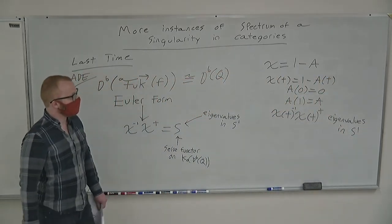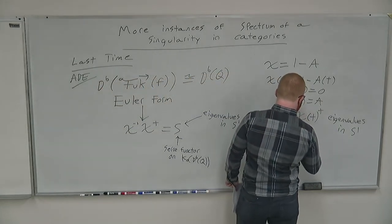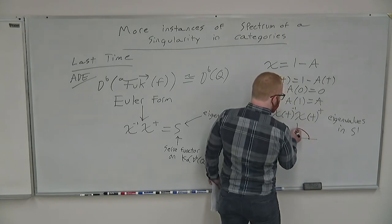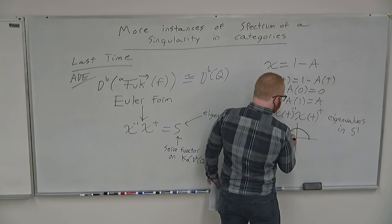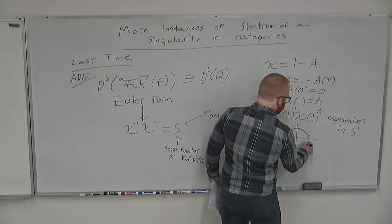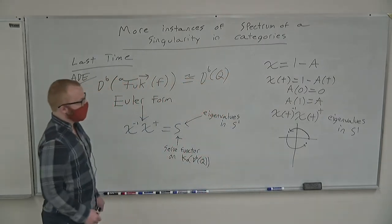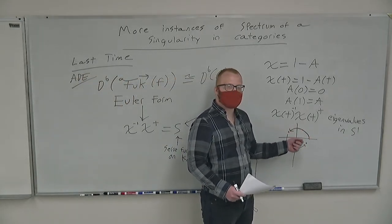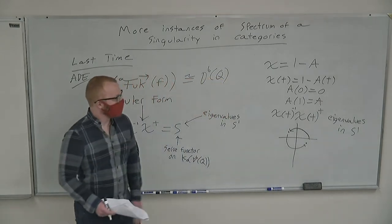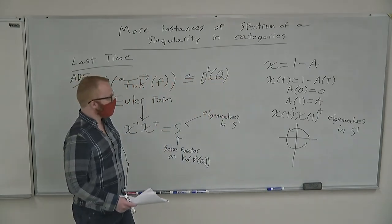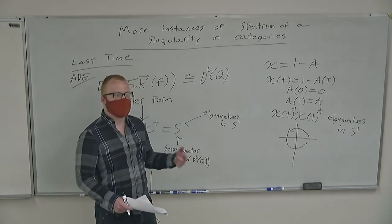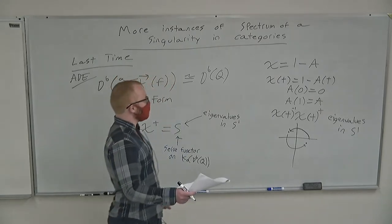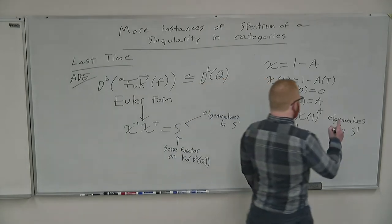The point of last time was that if we write this as one minus a different matrix and then parameterize the whole situation where A_0 is equal to zero and A_1 is equal to A, where chi(T)^{-1} times chi(T) tau has eigenvalues in S^1, we choose this naturally. Then we can watch these eigenvalues drift around the circle, and as in the D4 example last time, some eigenvalues went counterclockwise and some went clockwise. Watching this circular motion, you can count how many times these eigenvalues wrap around the circle, and that gives you the integral part of your logarithm, essentially determining the spectrum up to a shift.